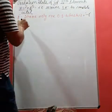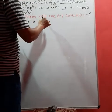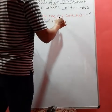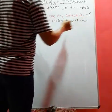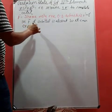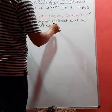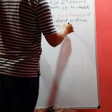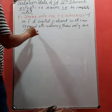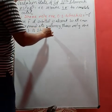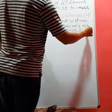In fluorine, the d orbital is absent, so it cannot expand its valency. Thus, only one oxidation state is shown by fluorine, which is -1.